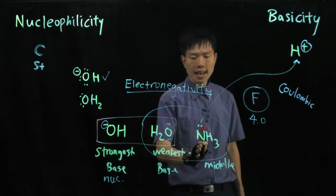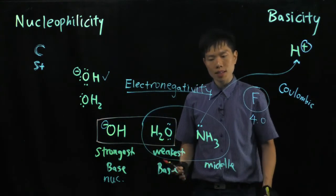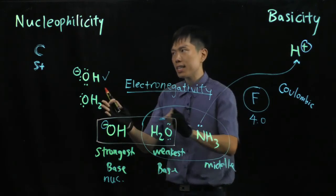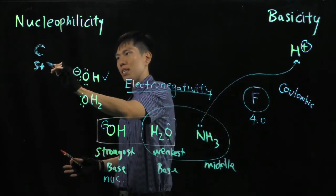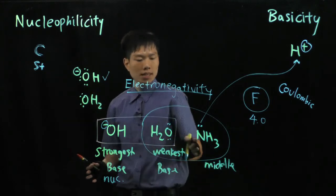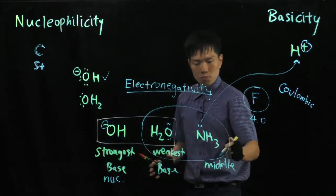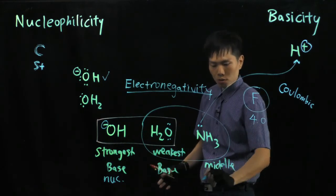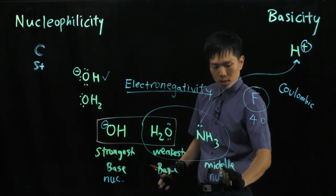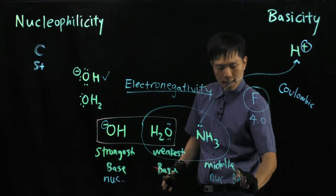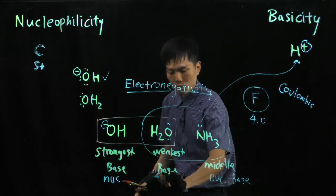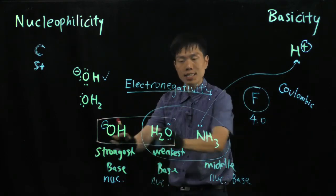Now between water and ammonia, likewise, the ammonia lone pair could donate electron to an atom that's electron deficient and form a bond with it better than the oxygen. So ammonia would be the next best nucleophile, so middle nucleophile, middle base, and by this virtue, water here is the weakest nucleophile among these three species given.